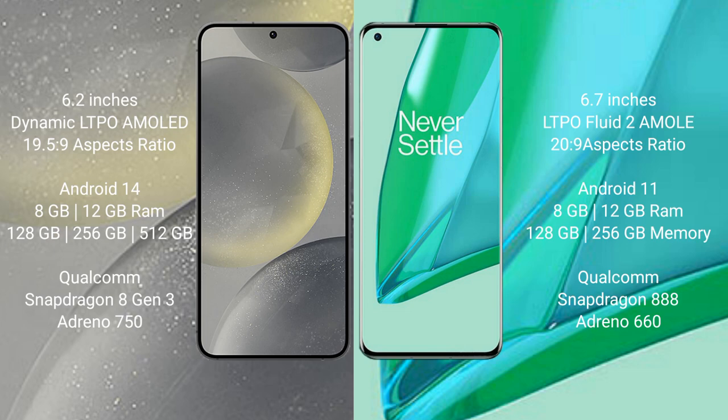Samsung Galaxy S24 runs on the Android 14 operating system. OnePlus 9 Pro runs on the Android 11 operating system.